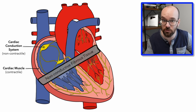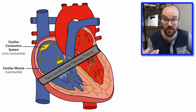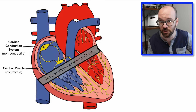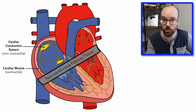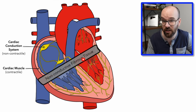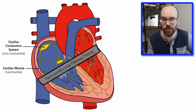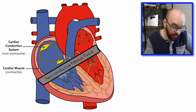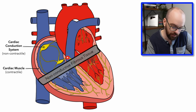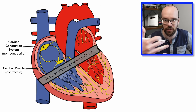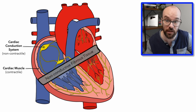We don't want the atria and the ventricles contracting at the same time. We want the atria to contract first, pushing blood into the ventricles, and then the ventricles to contract and push all that blood out of the heart. If this fibrous tissue were conductive, the atria and ventricles would contract simultaneously — which wouldn't be good. The only way the signal can pass through is via the cardiac conduction system; that's the only part where the signal travels through that fibrous connective tissue.